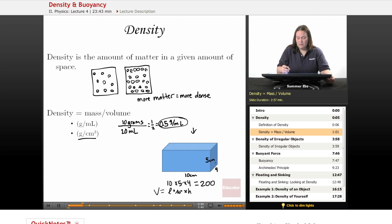You have centimeters times centimeters times centimeters, which would give you centimeters cubed. So the volume of the cube is 200 centimeters cubed.